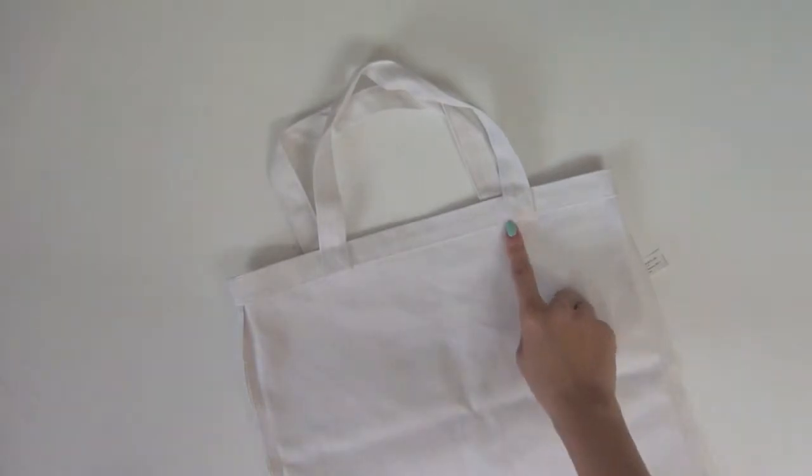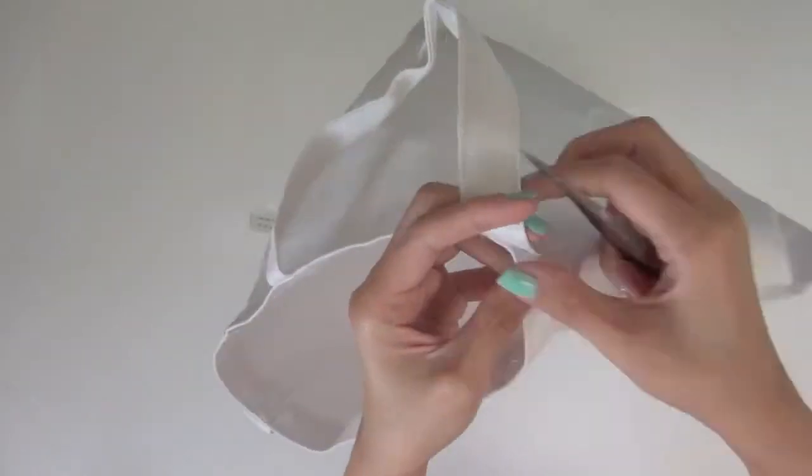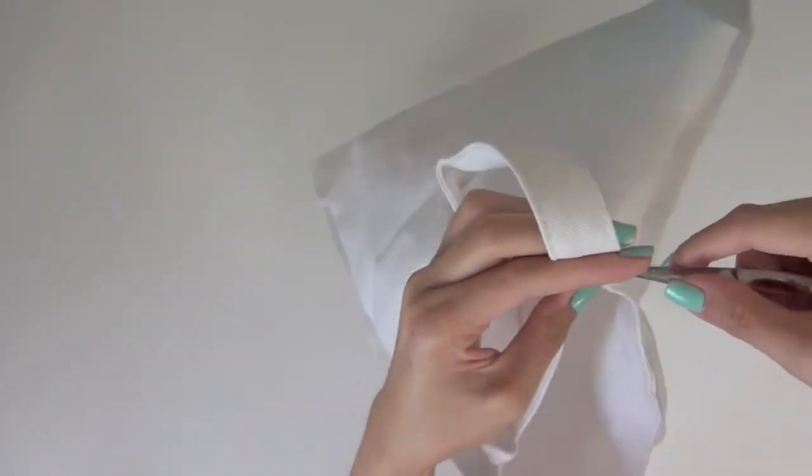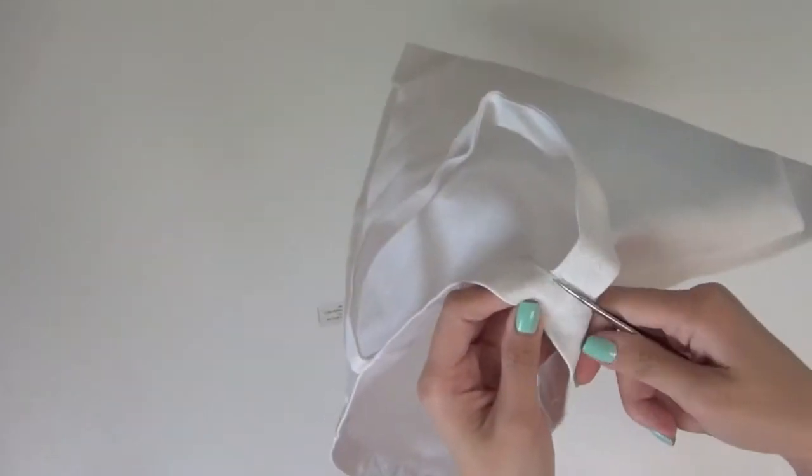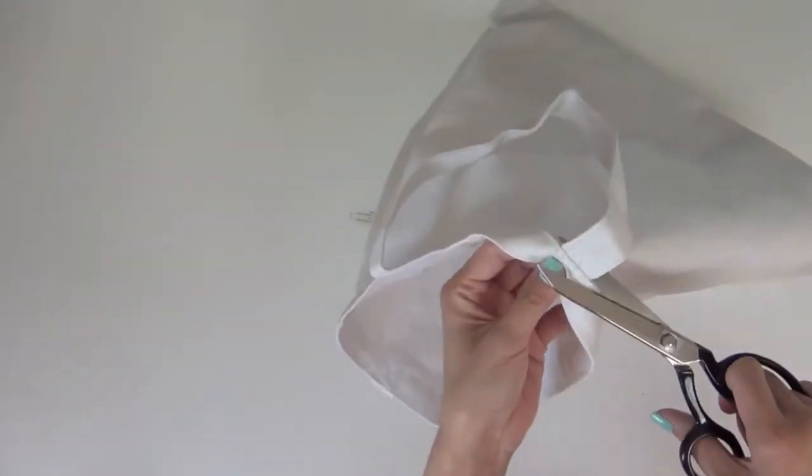First, let's turn one of the tote bags inside out and remove the handles. This is in case you want to turn your clutch into a wristlet, but for now I'm just carefully removing it and saving it for some future projects.